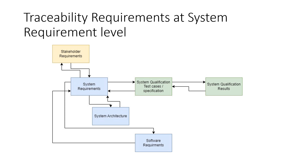Once the stakeholder requirements are converted into system requirements, the system requirements will have a verification criteria. Based on that verification criteria, we write test cases. One system requirement could have one or more test cases, but each and every system requirement must be verified. These system qualification test cases will get executed and you will have qualification results — a test report showing which test cases passed or failed. By establishing bidirectional traceability — two arrows, one forward and one backward — you can know which requirement is not implemented or not implemented properly.